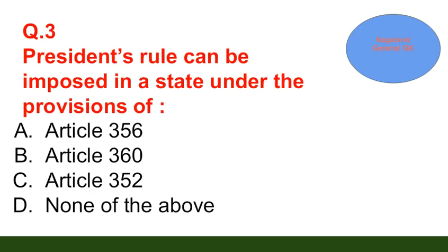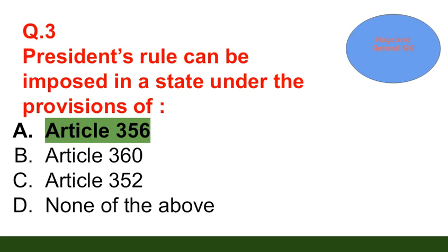Question number 3: President's Rule can be imposed in a state under the provision of — option A: Article 356; option B: Article 360; option C: Article 352; option D: none of the above. The correct answer is option A — Article 356.